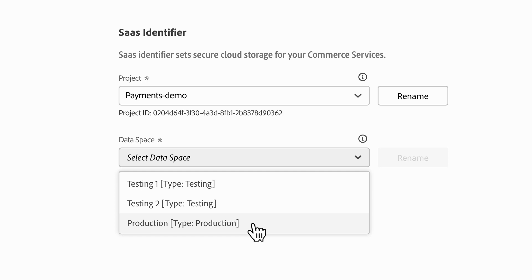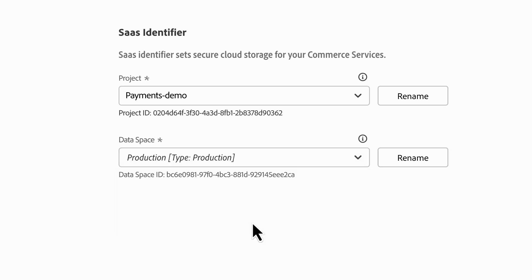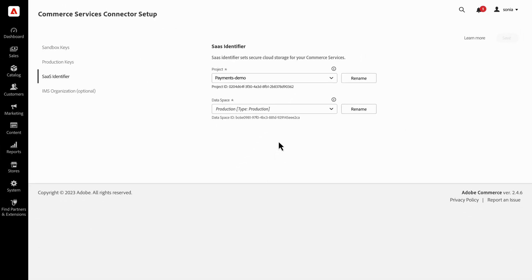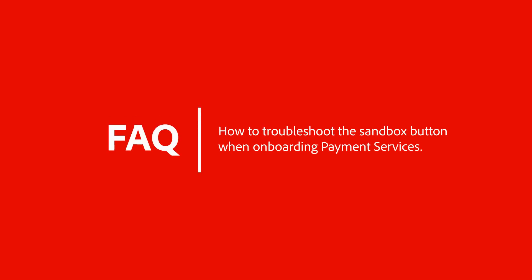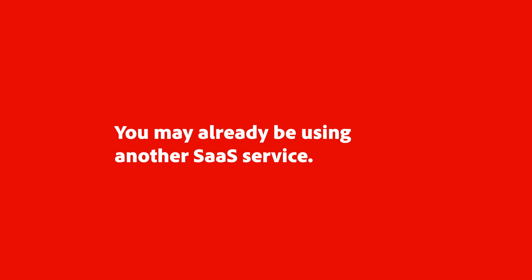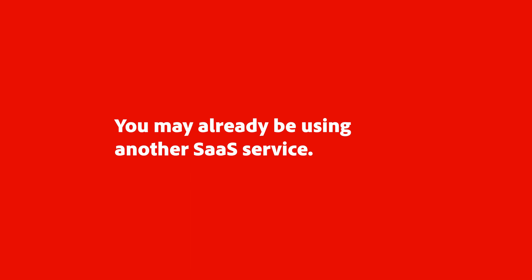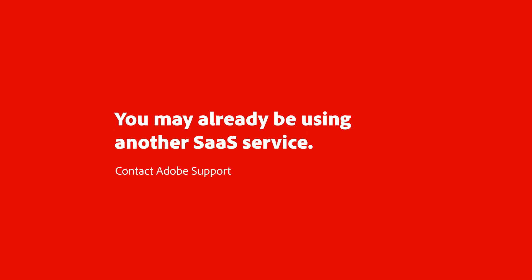You can point a commerce instance to a SaaS data space by selecting it in the commerce configuration. Next, we're going to cover why your sandbox button might be grayed out and unclickable when you try to onboard payment services. This might be happening because you're already using another SaaS service and there is data associated with the data spaces. If you're running into this problem, you'll need to contact Adobe Support for further help.